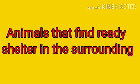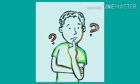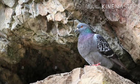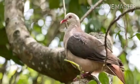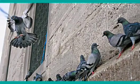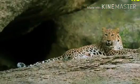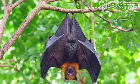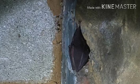We will discuss our second point: animals that find ready shelter in the surroundings. Some animals do not make any efforts to build a shelter — they simply look around for a safe place. Some doves and pigeons live in forests, and some live in small hollows in high cliffs. Some live near our houses. Tigers, leopards, and hyenas live in caves. Some types of bats live in tall trees, but some live in dark caverns in mountains, or they look for shelter in old, deserted, tumbledown buildings.